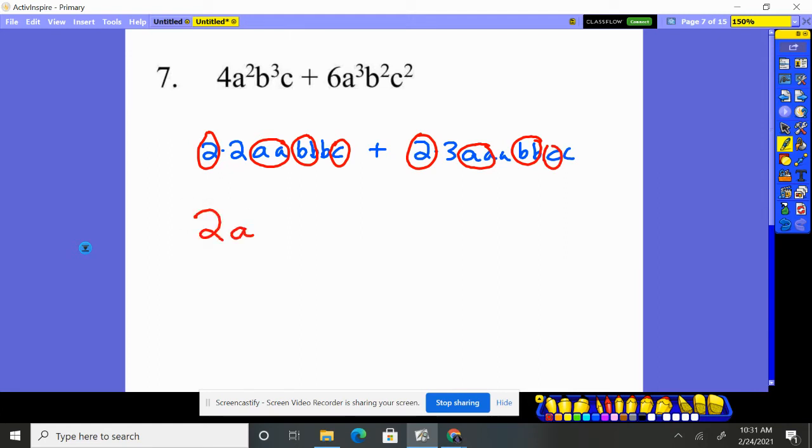A two, A times A which is A squared, B, B which is B squared, and a C. That's the most that they both shared. What was left behind? Well, we had a two and a B. Here we had a three, an A, and a C. And so there's going to be our answer.